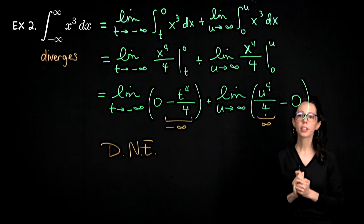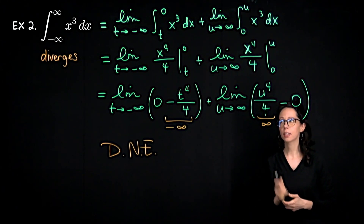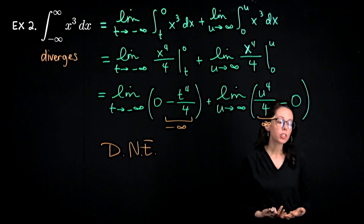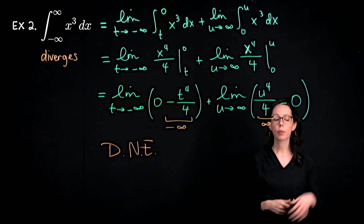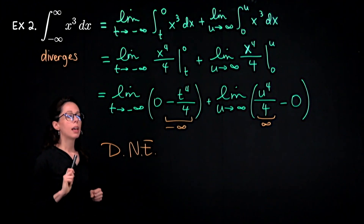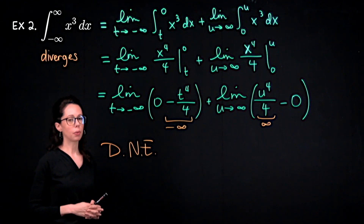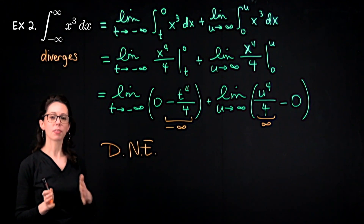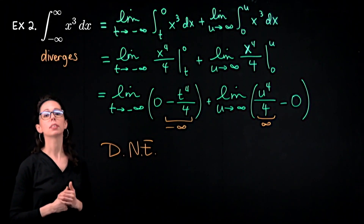It is understandable to want to say that the area enclosed between the x-axis and the graph of y equals x cubed from negative infinity to infinity is zero. Geometrically you could make this argument — we have the same amount of positive and negative area because this is an odd symmetric function. But while that could be a geometric computation, it is not the Riemann integral of x cubed from negative infinity to infinity. The way Riemann integration is defined in terms of subintervals and rectangular areas, this improper integral does not exist.